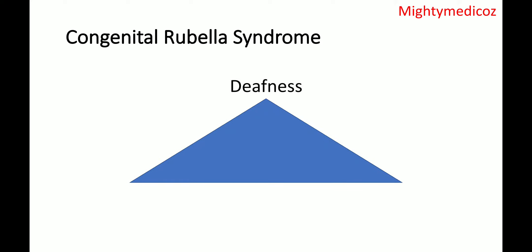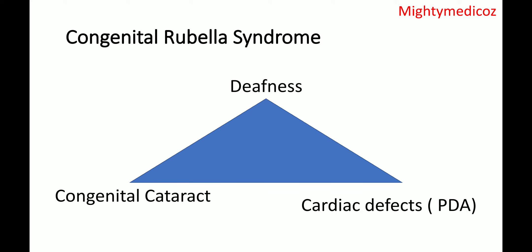The three components are deafness, congenital cataract, and a cardiac defect — most commonly PDA, which stands for persistent ductus arteriosus. So in the ear there will be deafness, in the eye there will be congenital cataract, and the cardiac defect is most commonly PDA.